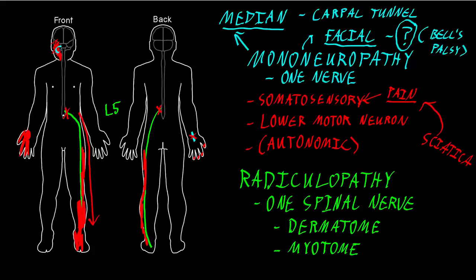A dermatome is the area of skin that receives somatosensory axons from one level of a spinal nerve or its roots, while a myotome is all the skeletal muscles that receive their lower motor neuron innervation from that spinal nerve level. With radiculopathy, when one spinal nerve or its roots are affected, we can see somatosensory abnormalities in its dermatome and/or lower motor neuron abnormalities in its myotome. These terms dermatome and myotome are used specifically for spinal nerve territories, not for peripheral nerves.